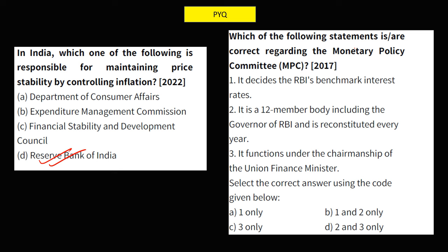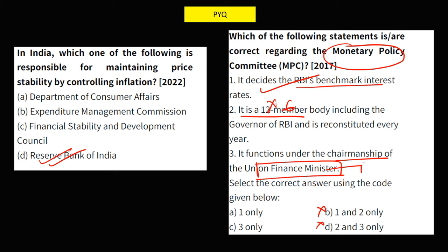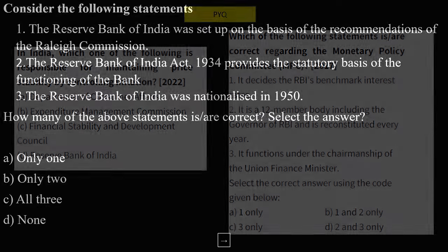Another question: Which of the following is true about the Monetary Policy Committee? Statement 1 — it decides the RBI benchmark interest rates — is correct. Statement 2 — it is a 12-member body — is incorrect; it is a 6-member body. Statement 3 — it functions under the chairmanship of RBI Governor — is incorrect as stated. So only statement 1 is correct. MPC is responsible for setting benchmark interest rates to control inflation, with a CPI inflation target of 4 plus or minus 2%.